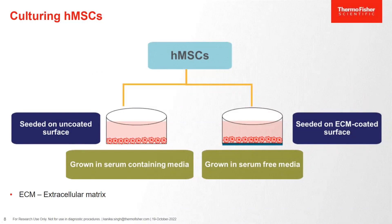Now, to talk about the growth and proliferation of human mesenchymal stromal cells, we know that there are two possible ways to culture your MSCs in vitro. Firstly, for growing your cells, either you can use media containing serum to grow your MSCs, or you can seed your cells on an ECM-coated surface and use a media which does not contain FBS.